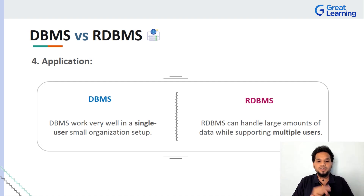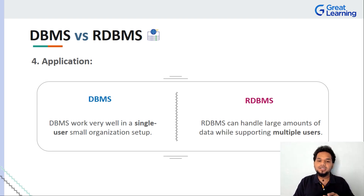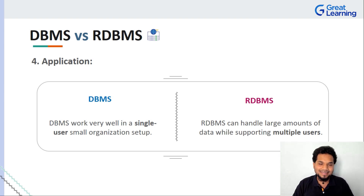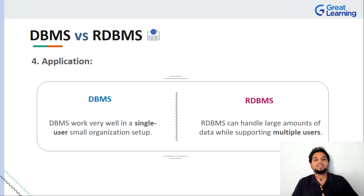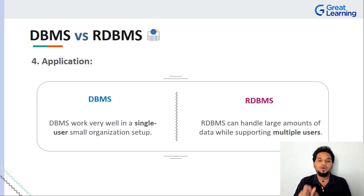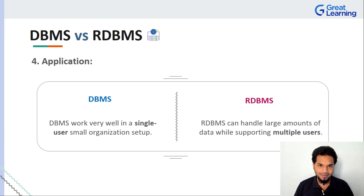Coming to point number four, we're talking about the application itself — where should you use a DBMS and where does an RDBMS work? A traditional DBMS works very well if your application depends on a single user and is part of a small organization setup. It may not have the capability to handle large amounts of data effectively, or allow multiple users to work on files simultaneously. We usually prefer an RDBMS when the requirement says you need more than one user to work on the data and the dataset is complex — as soon as it becomes multi-user or part of a large organization, look towards RDBMS.